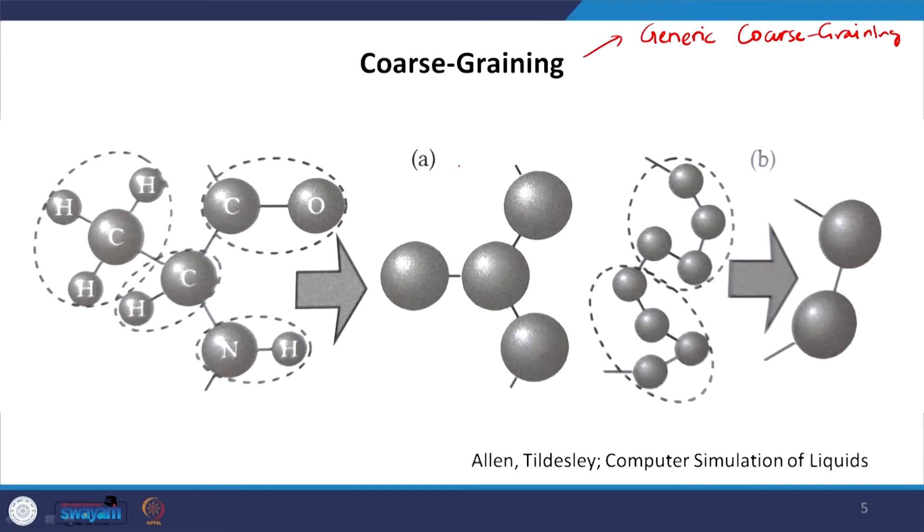In systematic coarse graining, we aim to map the actual molecular structure to a coarse-grained system of units, where every unit is comprised of many atoms with a clear mapping between atoms in the atomistic picture and the CG unit. In generic coarse graining there is no clear connection between the two, although one can be built if necessary. In systematic coarse graining there is a one-to-one mapping between the atoms and the CG unit.